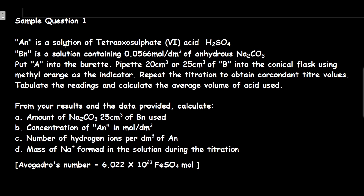The first question says: AN is a solution of tetrazo sulfate cis acid. YBN is a solution containing 0.05 mole per dm³ of anhydrous sodium tetrazo carbonate 4. Put A into the burette and 20 cm³ or 25 cm³ of B into the conical flask using methyl orange as the indicator. Repeat the titration to obtain concordant titre values. Tabulate the results and calculate the average volume of acid used.